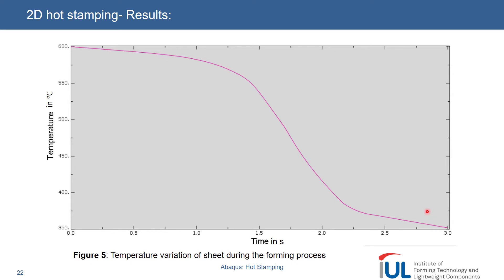If you redo the simulation without the gap conductance, check out what the temperature distribution will look like without it - that would be interesting. This result is according to physical expectations, so physically we would see this type of curve.